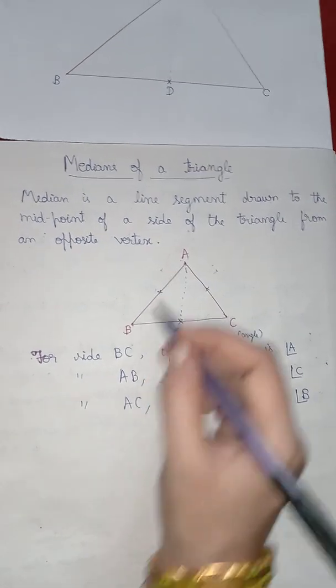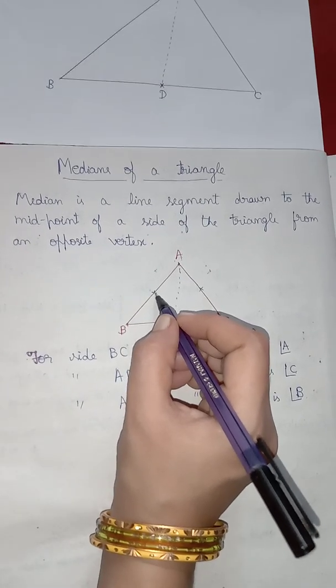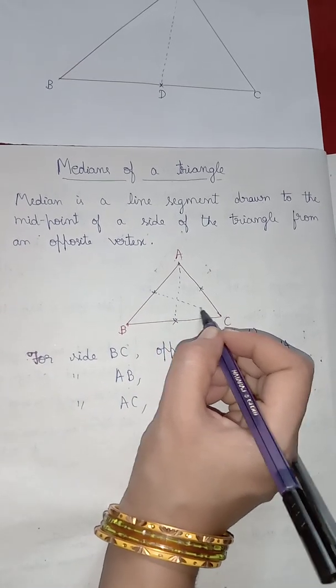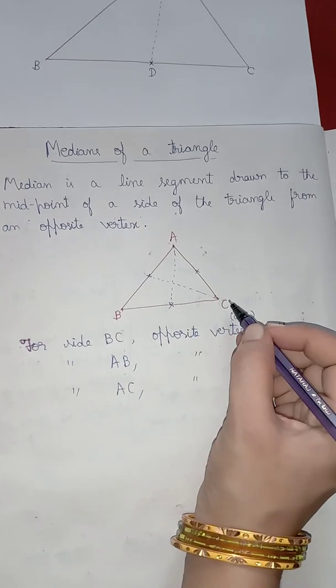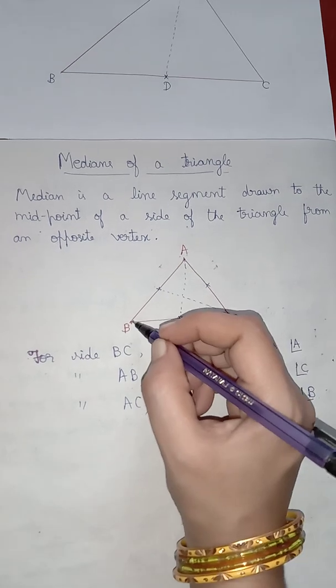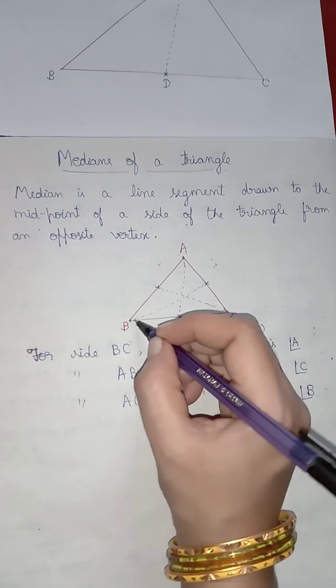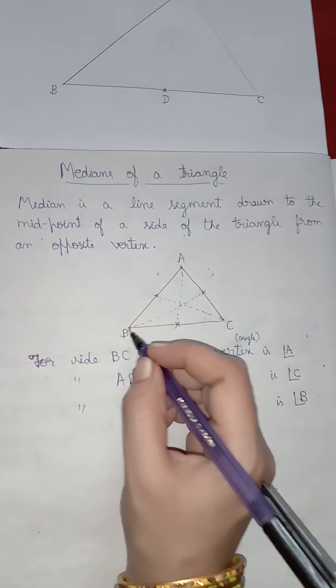Now, for side A, B, the line joining midpoint of side A, B to the opposite vertex that is C. For side A, C, line joining the midpoint of A, C to the opposite vertex B.